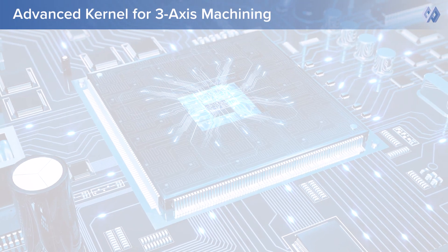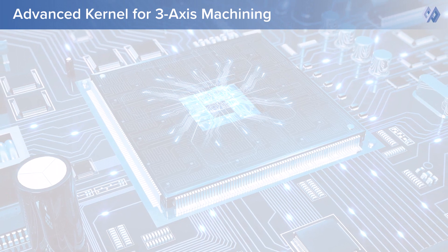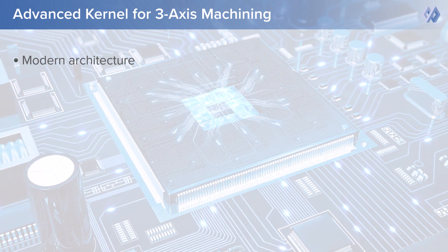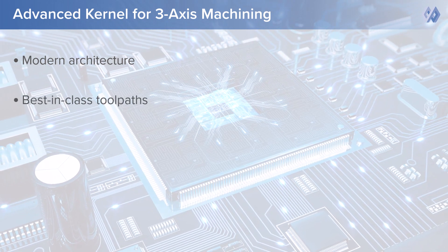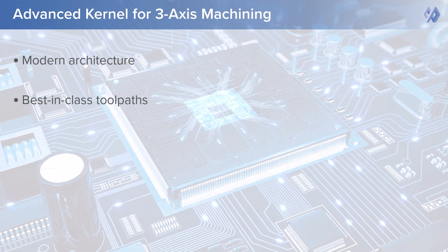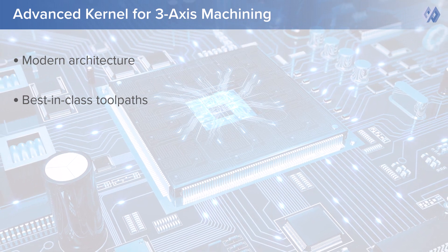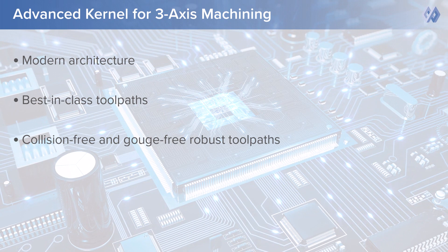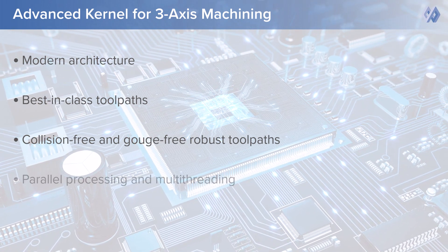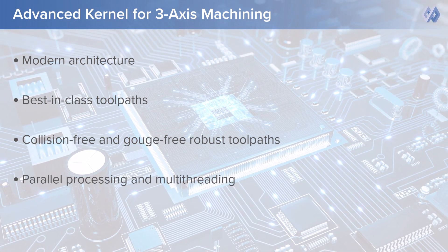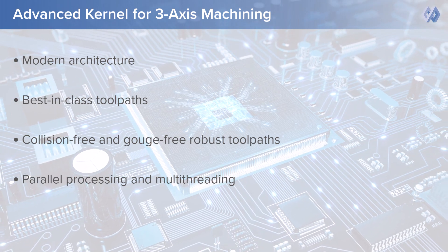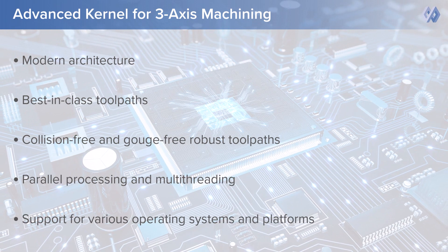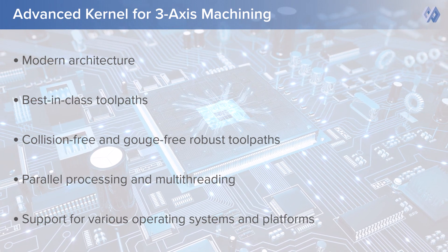Let us have a look at some of the key highlights of the kernel for our solution. We provide a modern architecture which has been in development for more than 15 years. Leveraging this architecture, we provide techniques to generate best-in-class machining toolpaths. These toolpaths not only provide the highest machining precision, but are safe as well. The toolpaths are individually computed on multiple cores and scale up very well on modern systems. Our solution supports the majority of operating systems and is even cloud-ready.